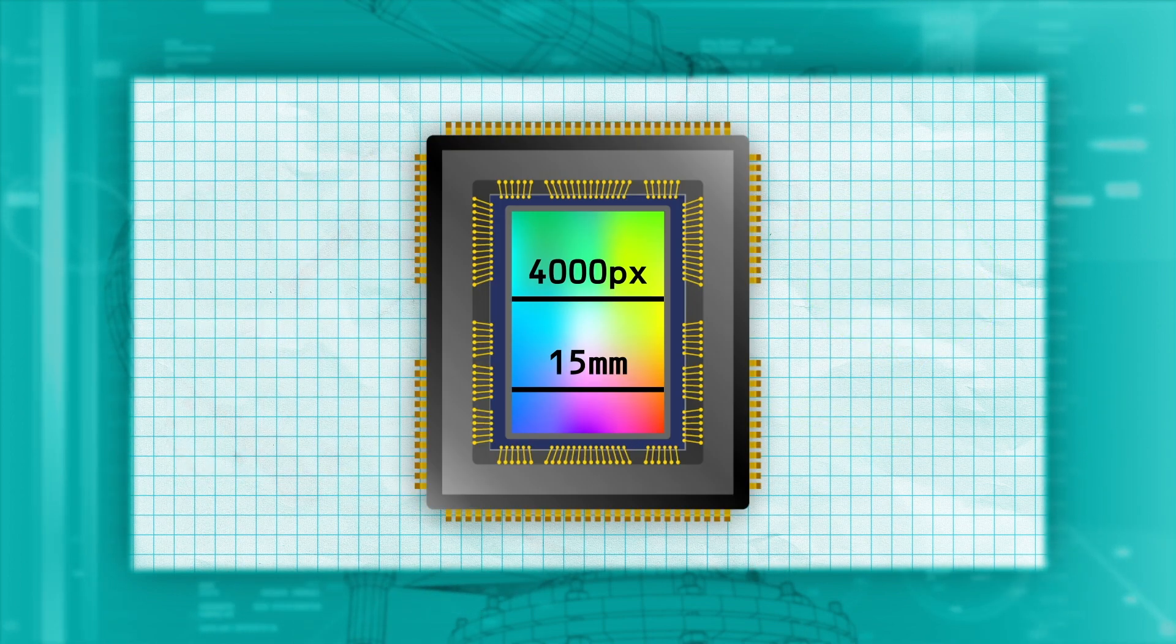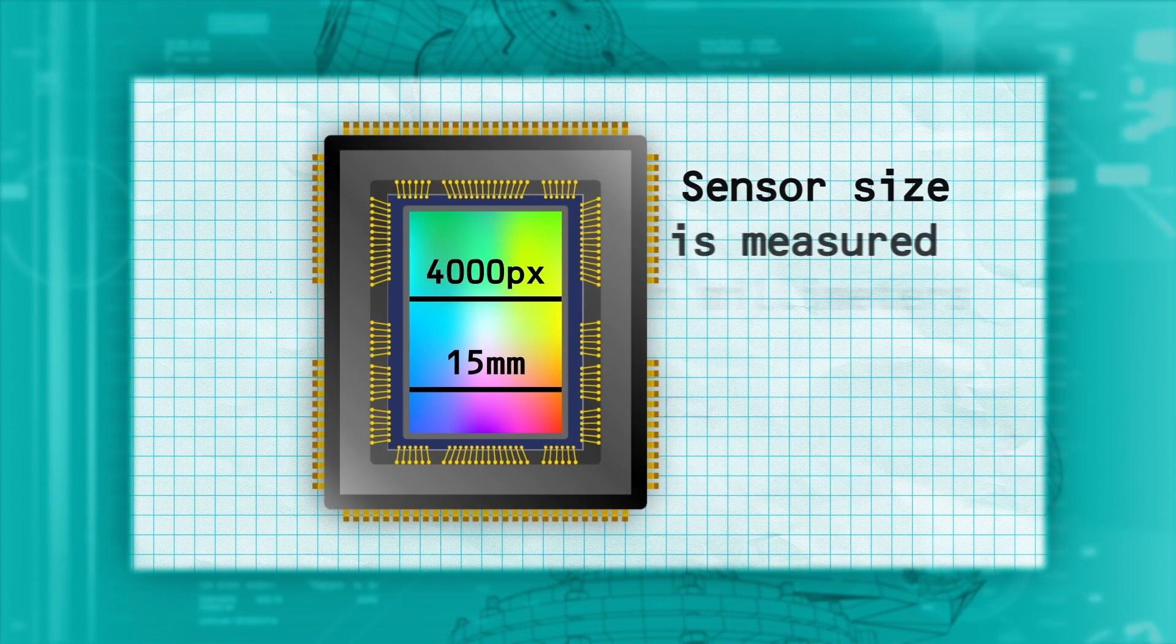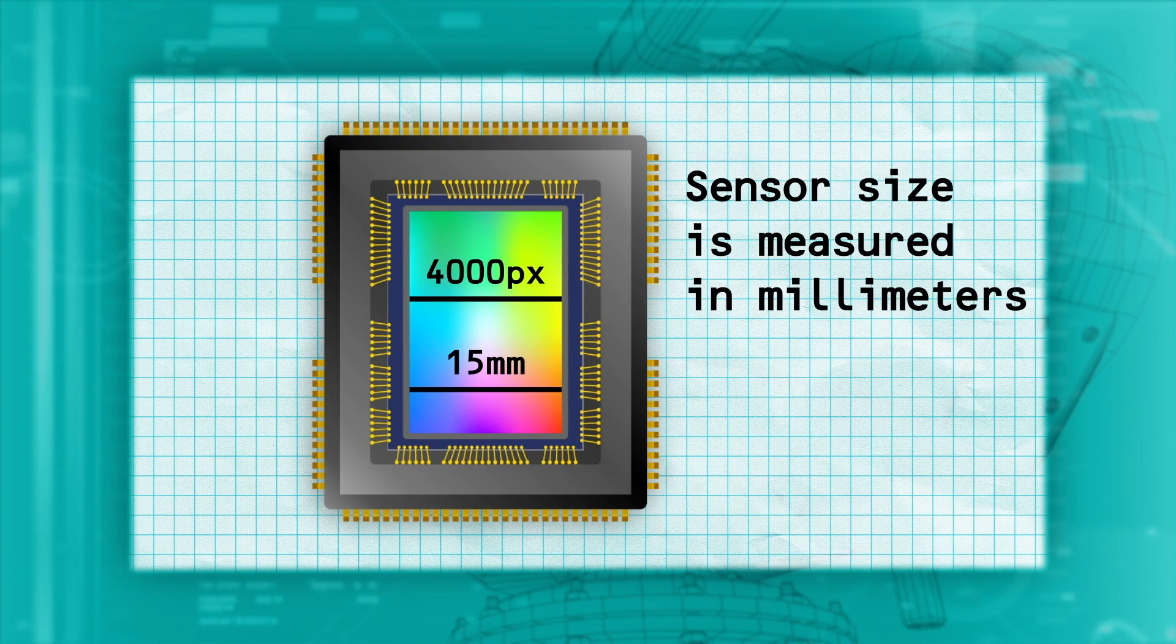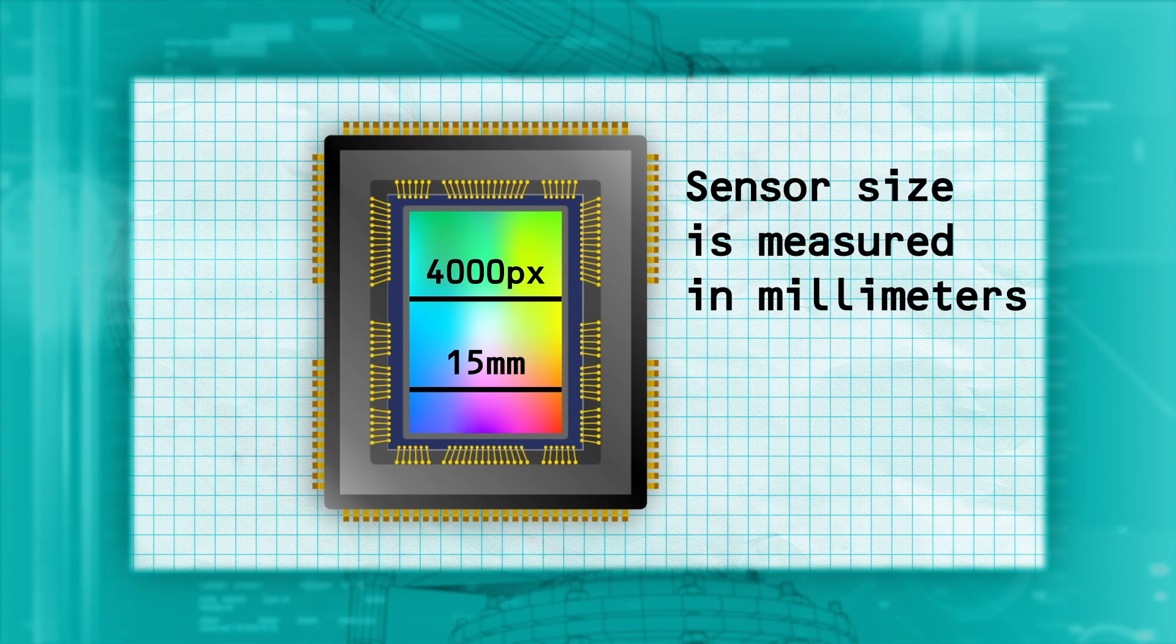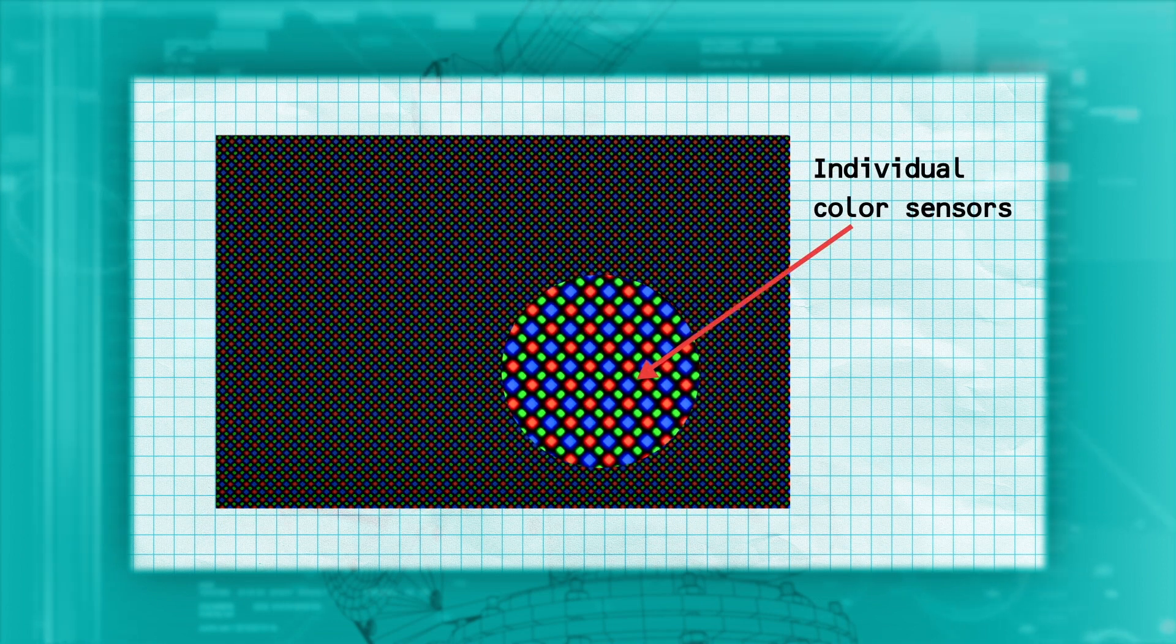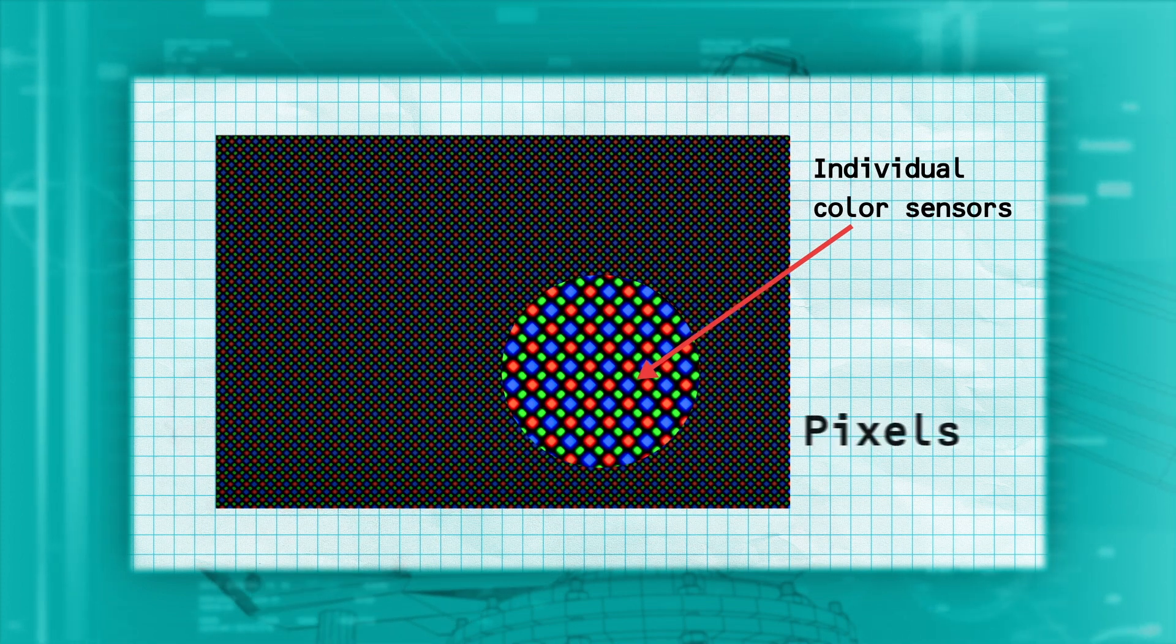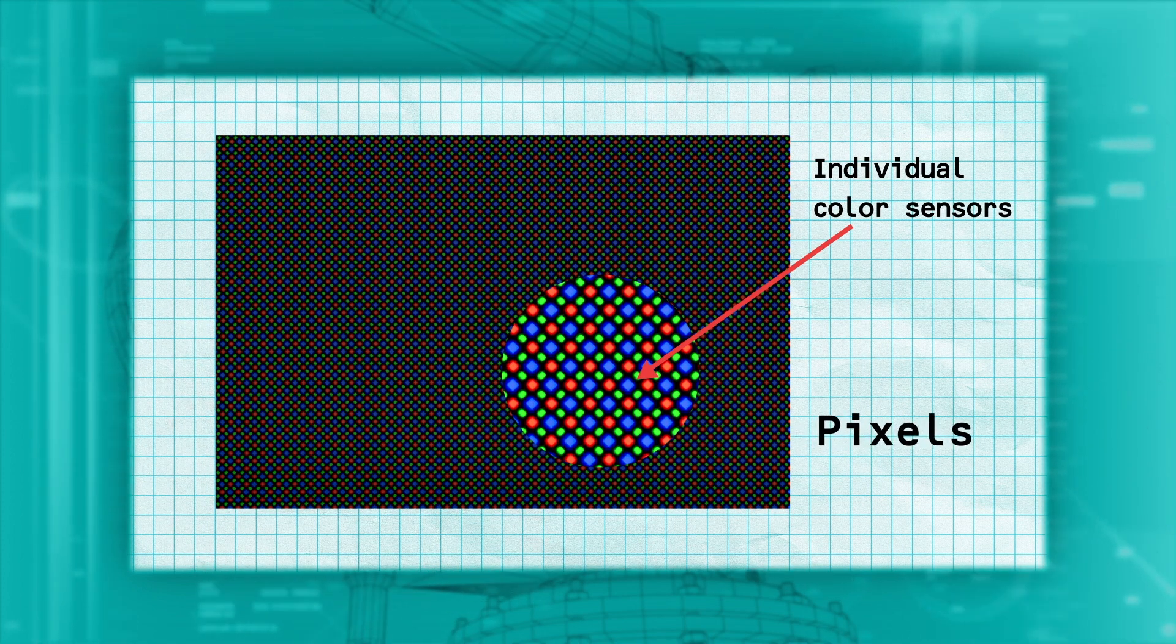The camera sensor itself is fairly small. Usually, these sensors are measured in millimeters and are about the size of a fingernail, but can be slightly bigger or much smaller. The sensor is made up of a grid of very small individual color sensors, similar to the cone cells in your eyes. These small sensors are known as pixels, a term you've probably heard before.